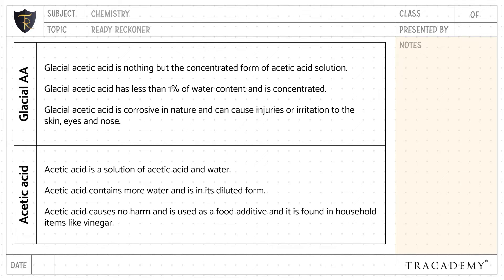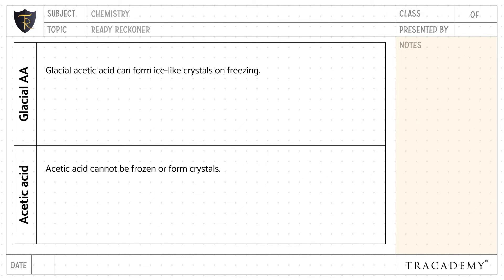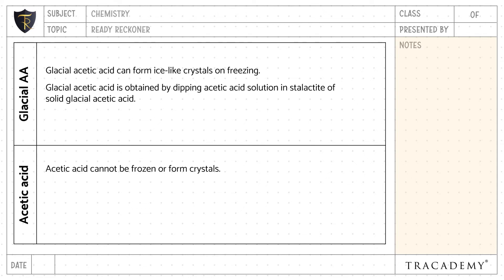Acetic acid is used as a food additive and is found in household items like vinegar. Glacial acetic acid can form ice-like crystals on freezing, whereas acetic acid cannot be frozen or form crystals.